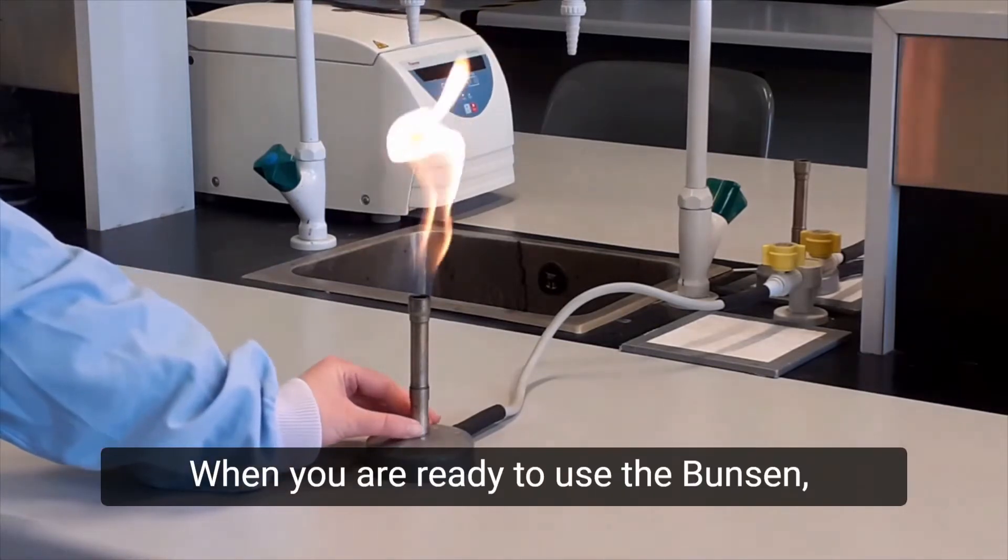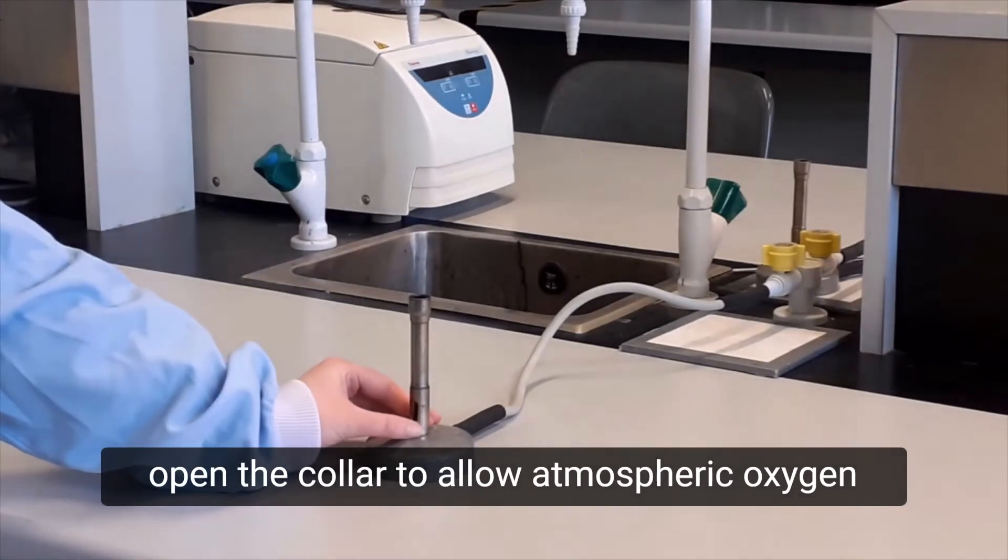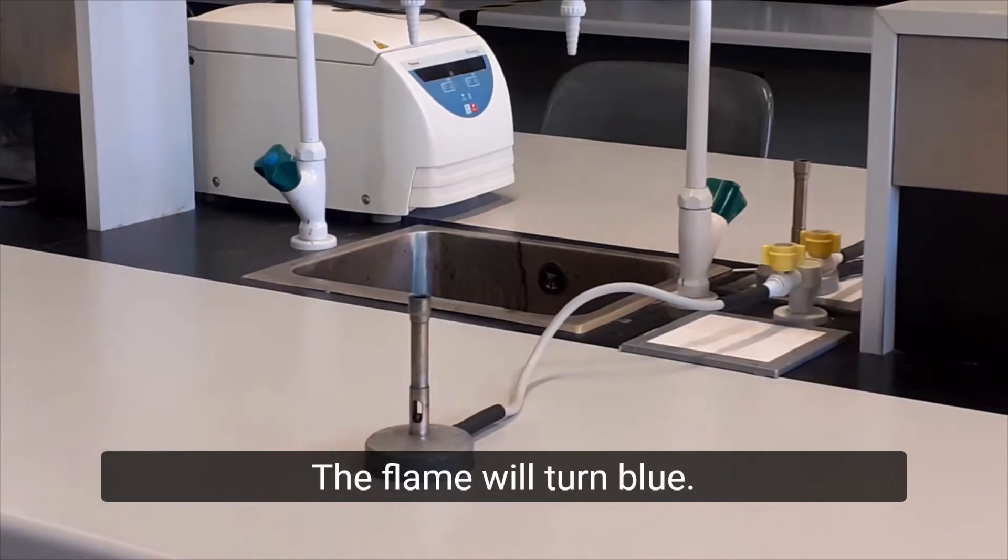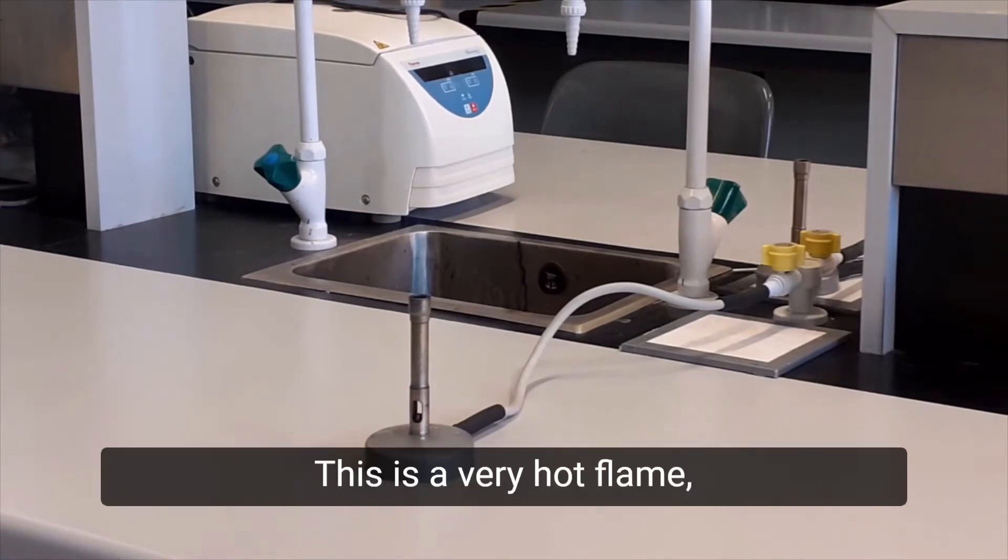When you are ready to use the Bunsen, open the collar to allow atmospheric oxygen to mix with the gas. The flame will turn blue. This is a very hot flame, but it is relatively difficult to see.